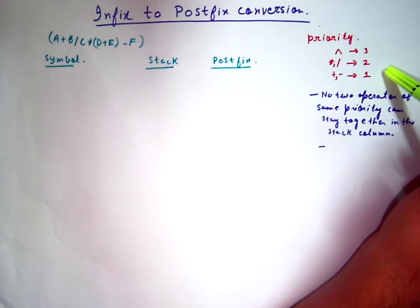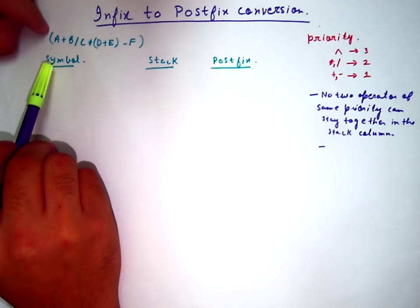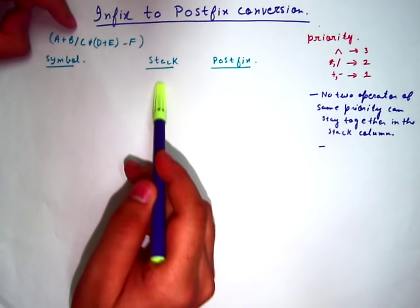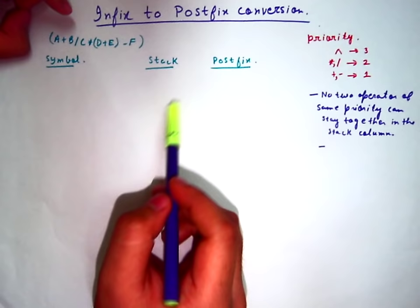Now we have an infix expression. What we'll do is, we'll scan every character. Whenever an operand comes, we'll add it to the postfix column. Whenever an operator comes, we will push it to the stack column. Now for the popping, I'll explain to you while I solve the expression.